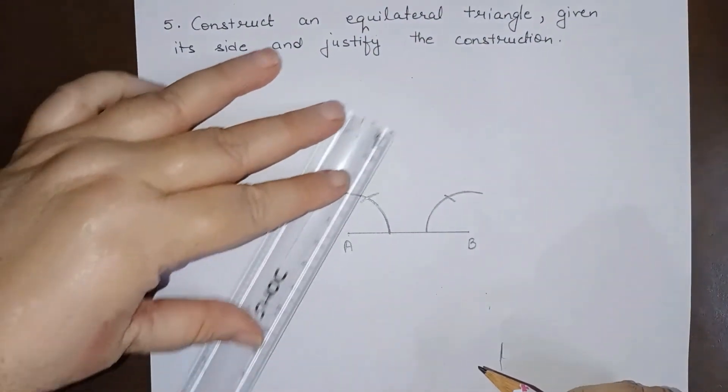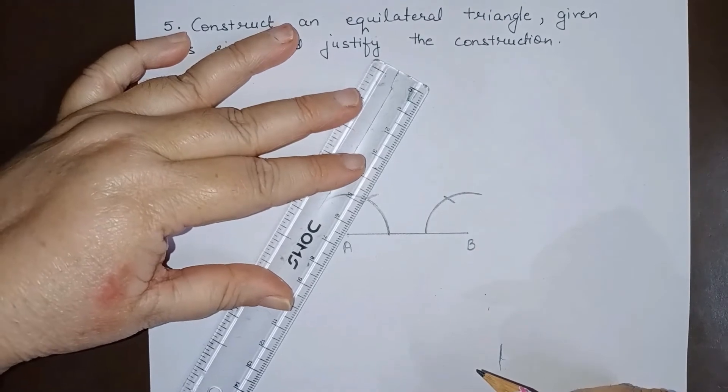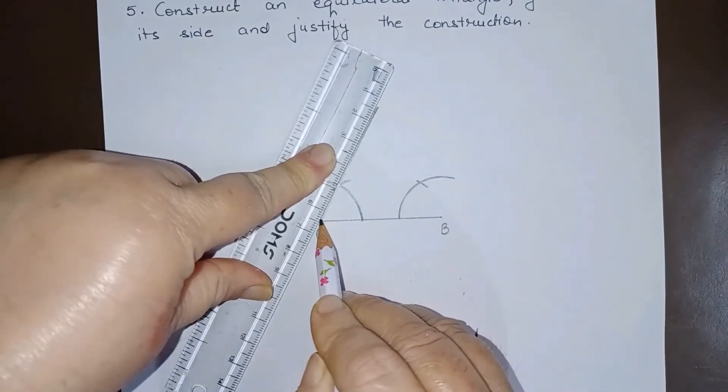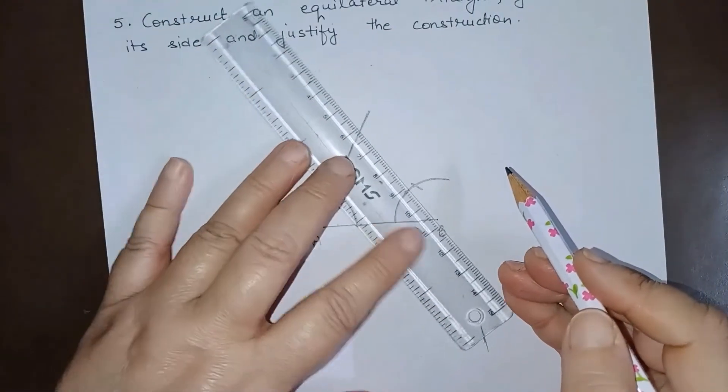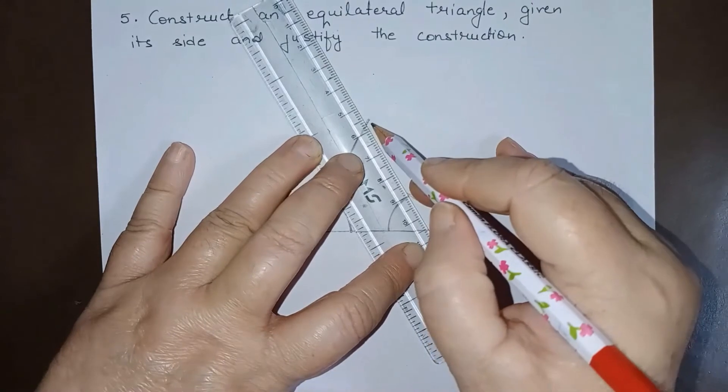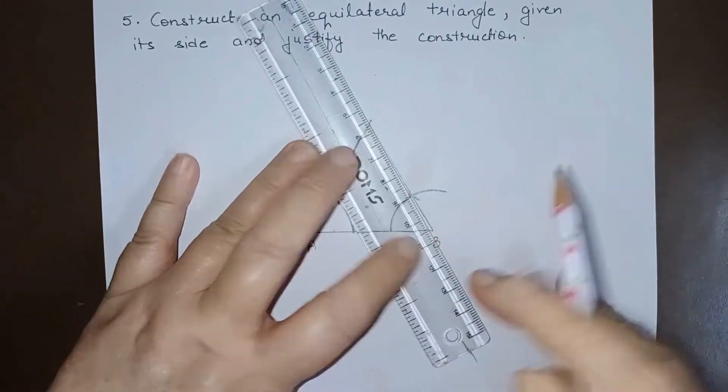So this is an angle of 60 degree at point A and this is an angle of 60 degree at point B.